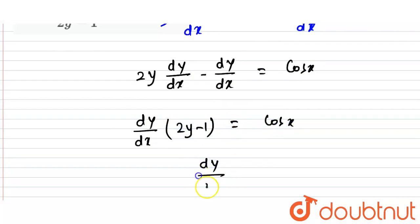So what is the value of dy/dx? This equals cos x upon 2y minus 1. This is the final answer.